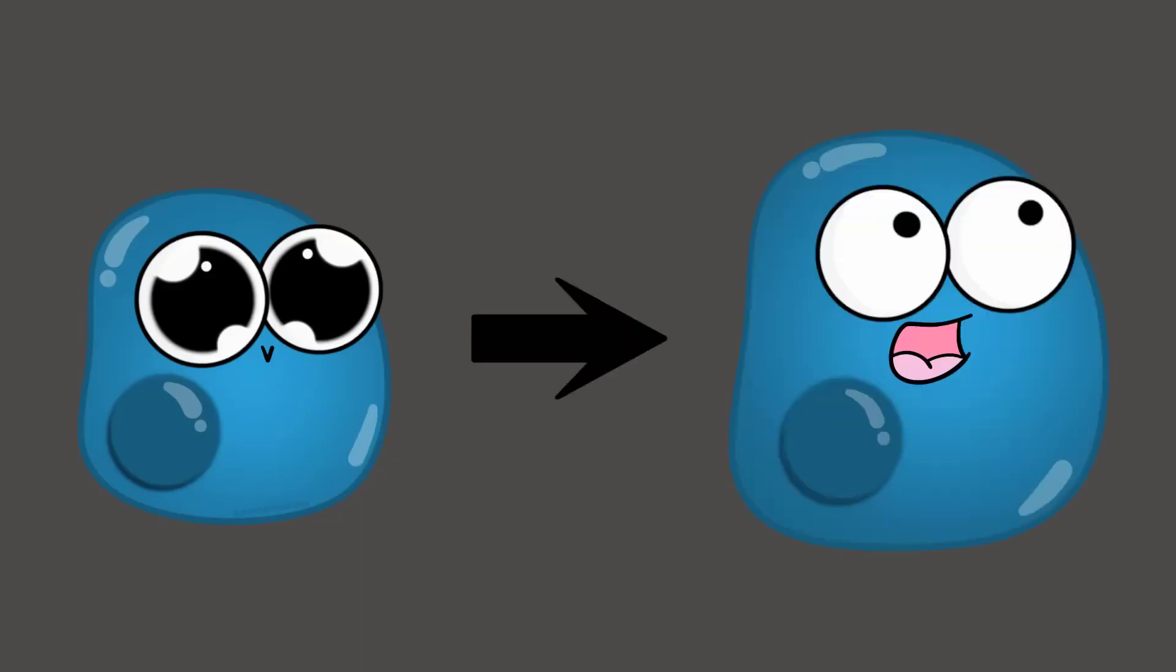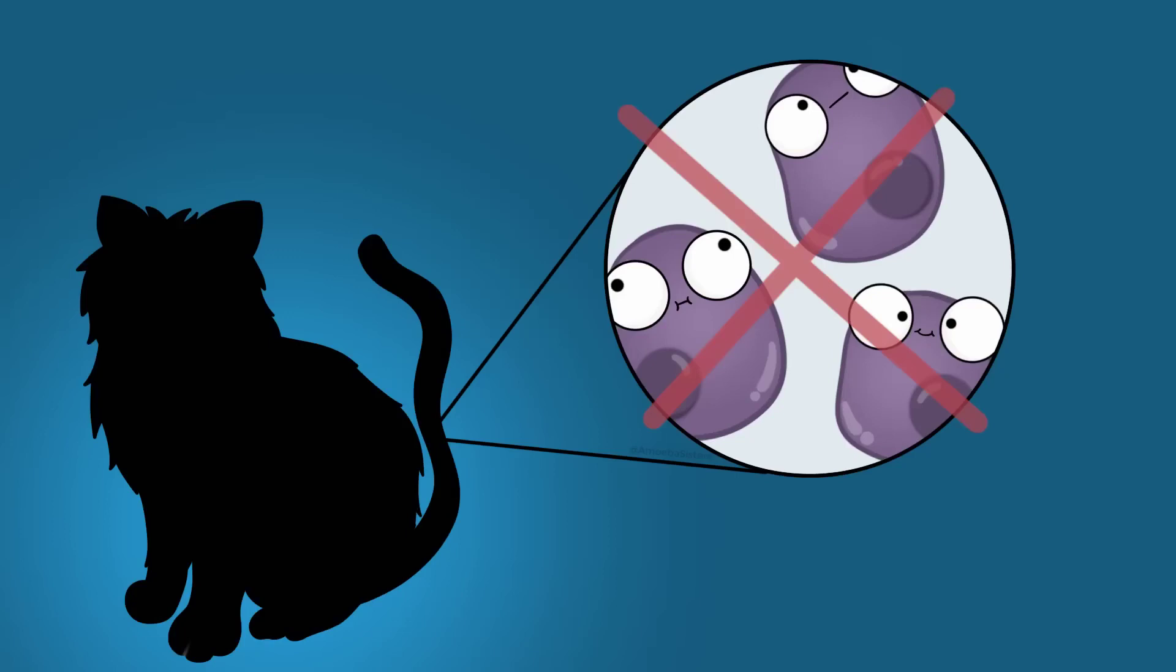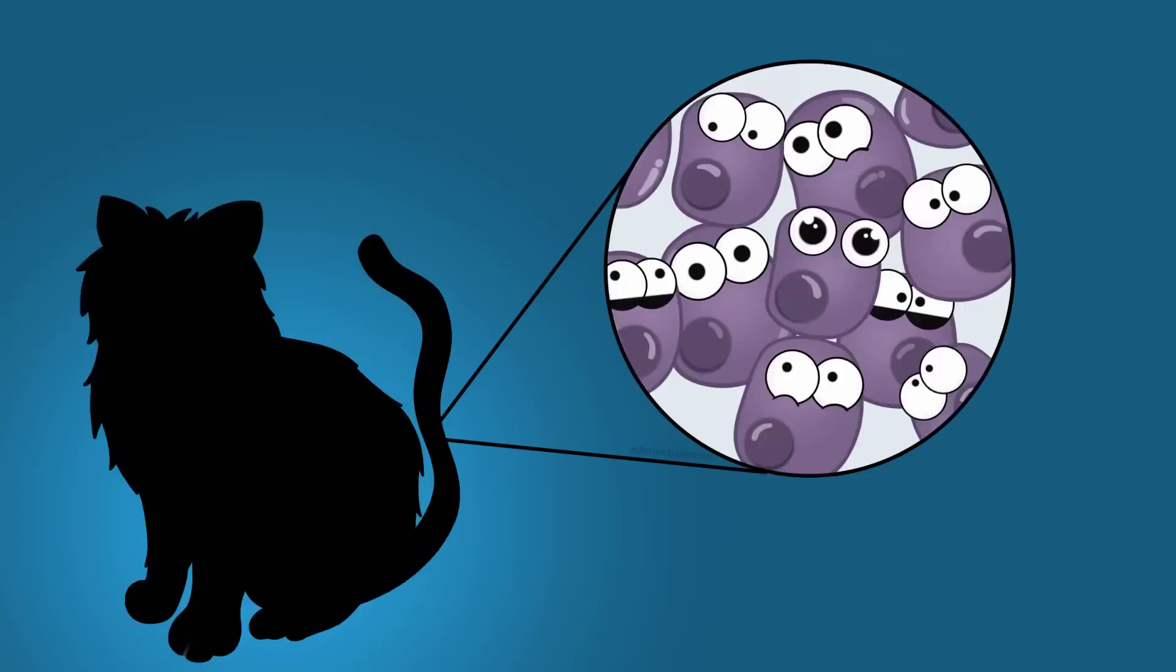Cells themselves can grow in size. But let's put it in perspective now. A multicellular organism isn't growing because each individual cell is getting bigger. A multicellular organism itself grows by making more cells, by the cells making more cells by dividing. That's cell reproduction.